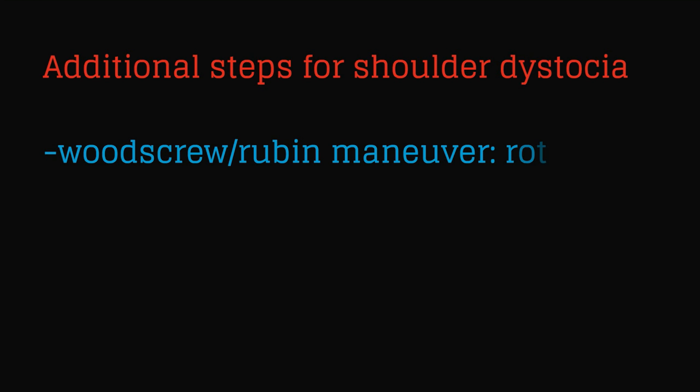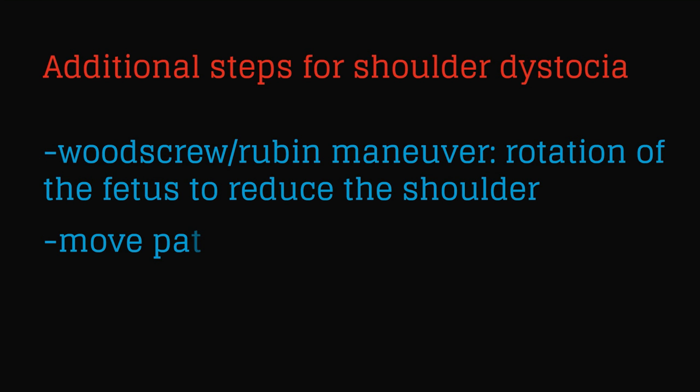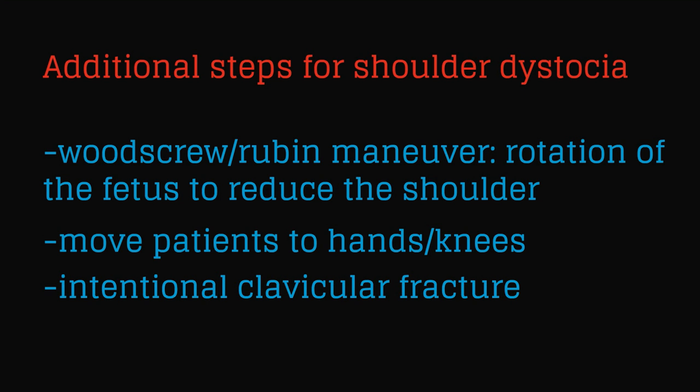Additional steps for shoulder dystocia include the wood screw and Rubin maneuver which are rotation of the fetus to reduce the shoulder. It can also be helpful to move the patient onto her hands and knees. In severe cases, intentional clavicular fracture can be performed and the last option is to perform a Zavanelli procedure which requires reversing the cardinal movements of labor and to flex the head back into the uterus and to perform a cesarean delivery.